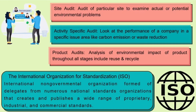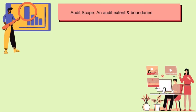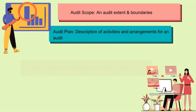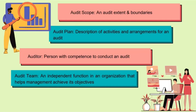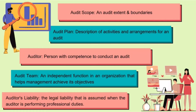The International Organization for Standardization, ISO, is an international non-governmental organization formed of delegates from numerous national standards organizations that create and publish a wide range of proprietary, industrial and commercial standards. Audit scope is the extent and boundaries of an audit. Audit plan is a description of activities and arrangements of an audit. An auditor is a person with the competence to conduct an audit. An audit team is an independent function in an organization that helps management achieve its objectives. Auditor's liability is the legal liability assumed when the auditor is performing professional duties.